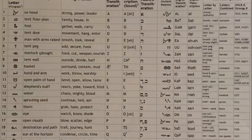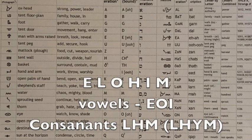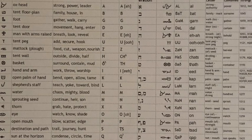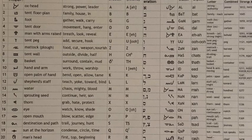Now let me get into the pictograph — the ancient Paleo-Hebrew and its meaning for Elohim. First, drop all the vowels E, O, and I from Elohim (E-L-O-H-I-M), and we're left with L, H, Y, and M — Lamed, He, Yod, and Mem.